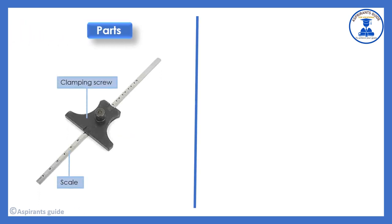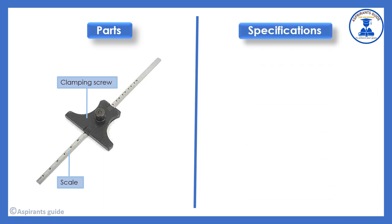The parts of the ordinary depth gauge: there are two major parts. One is the clamping screw, and the second one is the scale. The scale is fixed by the clamping screw.